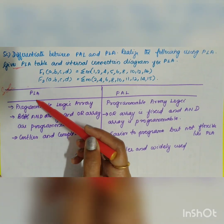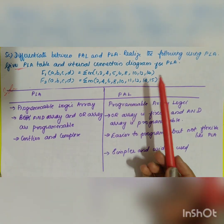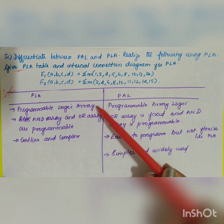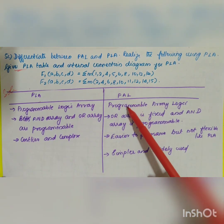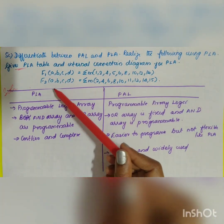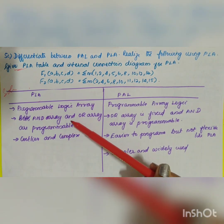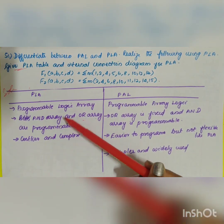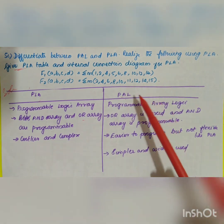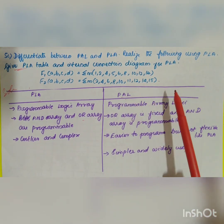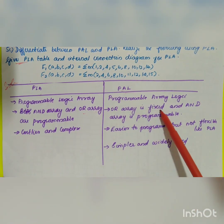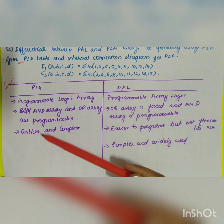First, let's see the difference between PLA and PAL. PLA stands for Programmable Logic Array and PAL stands for Programmable Array Logic. In PLA, both the AND array and OR array are used and both are programmable, whereas in the case of PAL, AND and OR arrays are used but the OR array is fixed and the AND array is programmable.